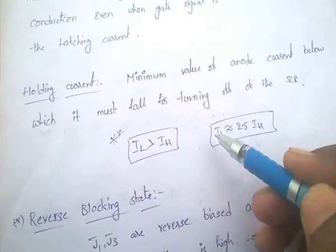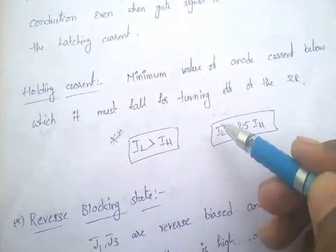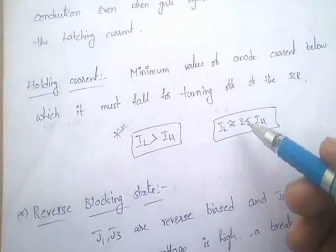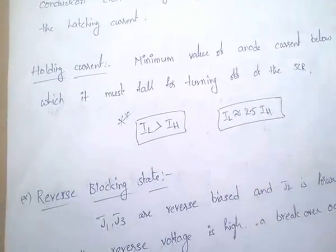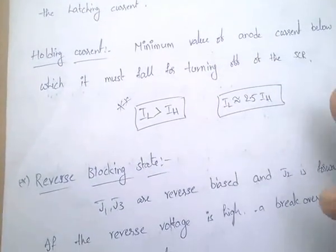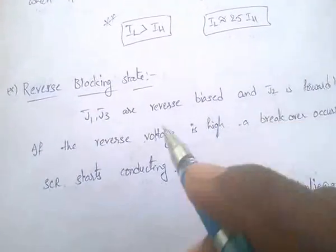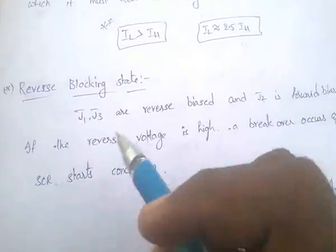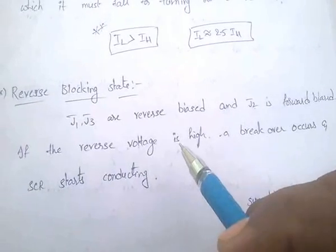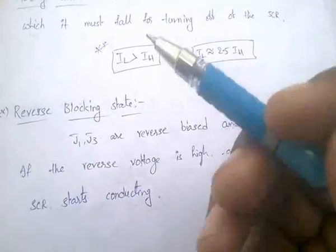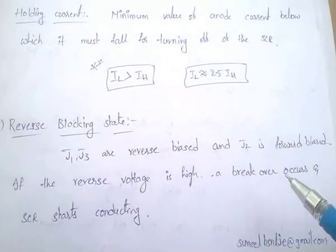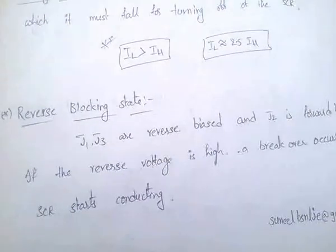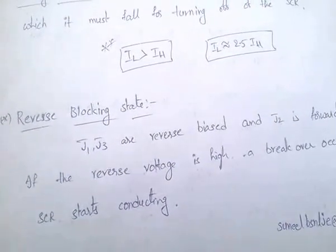The relation between latching current and holding current is very important: latching current is greater than holding current, and on average IL ≈ 2.5 × IH. In the reverse blocking state, J1 and J3 are reverse biased and J2 is forward biased; when reverse voltage is very high and break-over occurs, the SCR starts conducting.